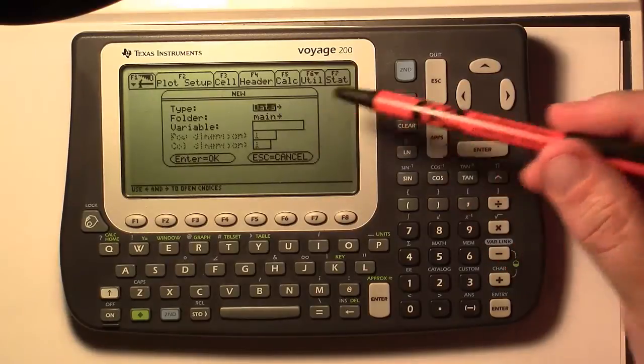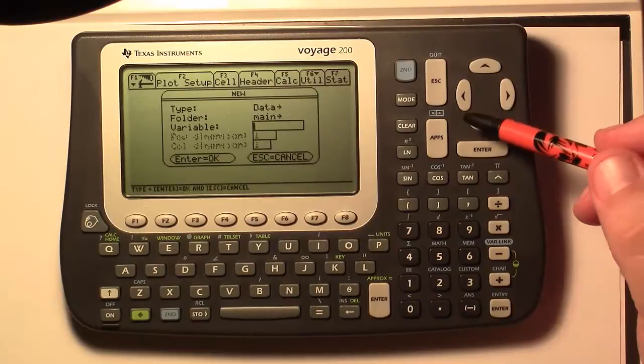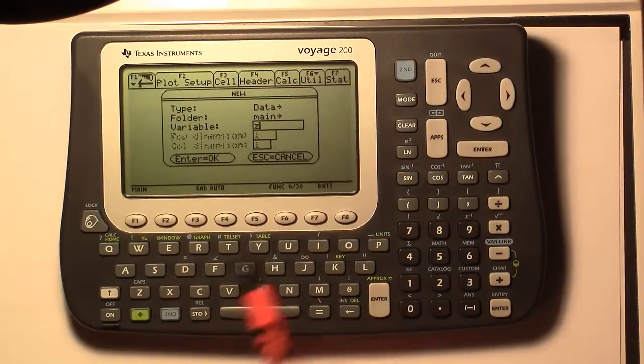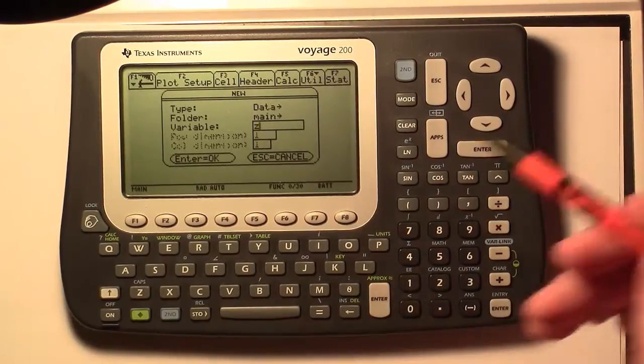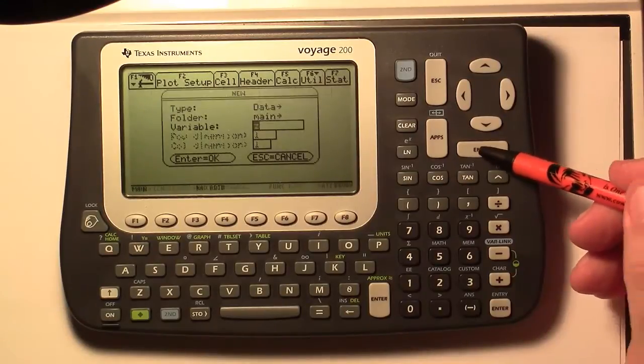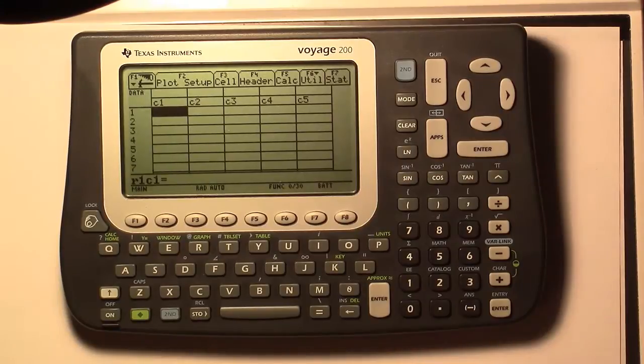Now it comes up as type as data and that's what we want. Main folder is fine. And we'll pick a variable. Maybe I'll put in Z. And you don't have to have a single letter. And then I'll press enter and enter again. Sometimes you have to press enter twice on these. First one is just to confirm what you input and then second time is actually to process the screen.